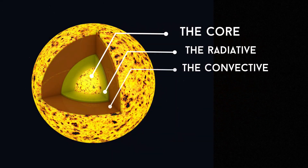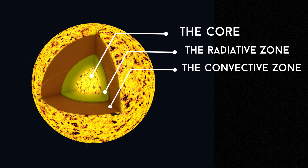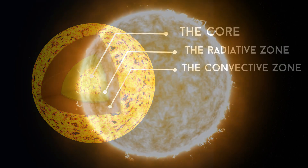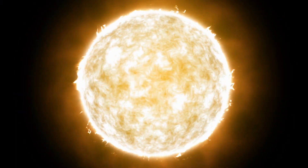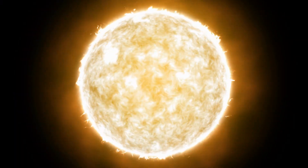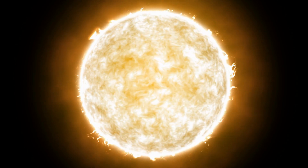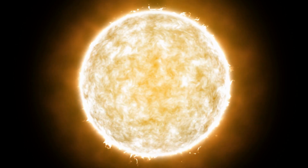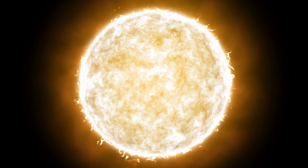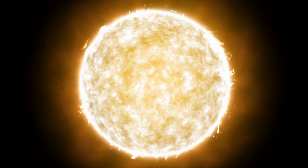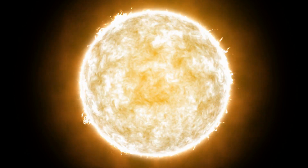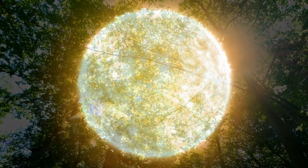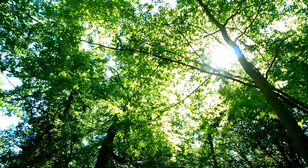The Sun is made up of three main layers: the core, the radiative zone, and the convective zone. The core is where nuclear fusion takes place, and it is the source of the Sun's energy. The radiative zone is where energy is transported by photons, and the convective zone is where energy is transported by convection.